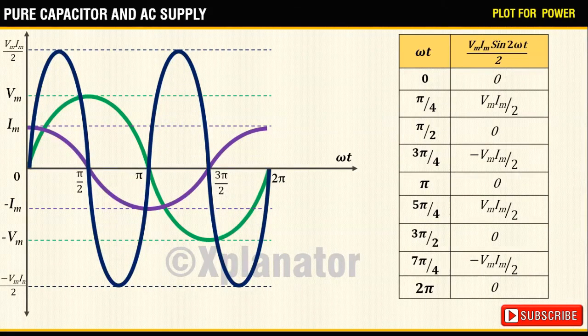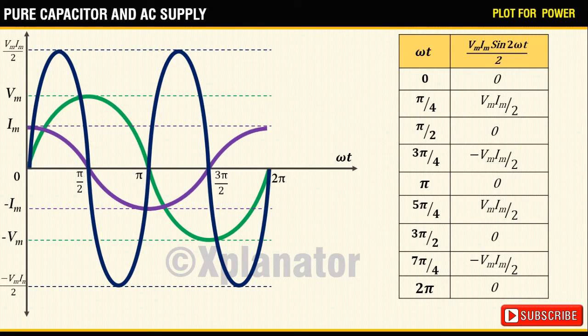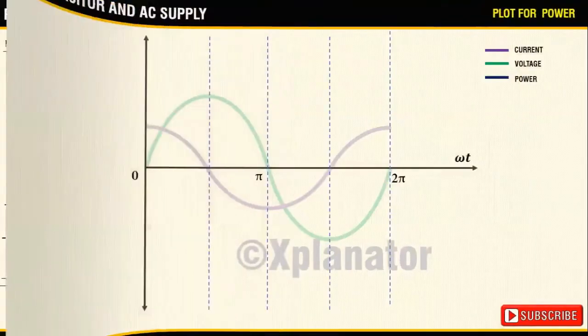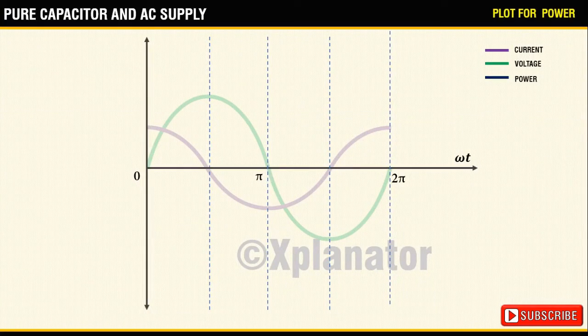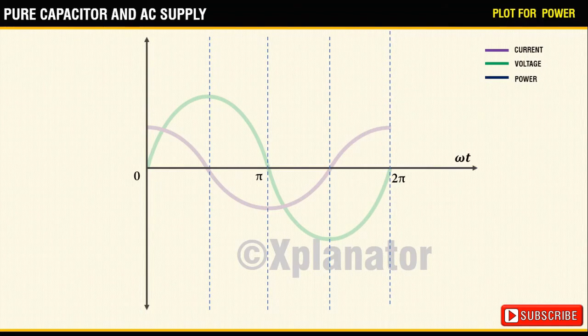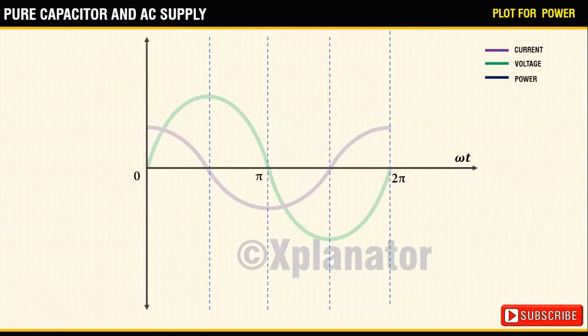giving a net area of 0. For a better understanding, you see that the power curve is a multiplication of voltage and current plot. So depending upon the polarity and magnitude of both the waves, the resultant waveform will have a sinusoidal pattern symmetric about the x-axis.